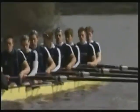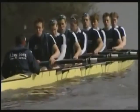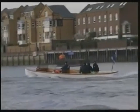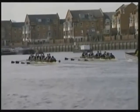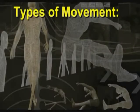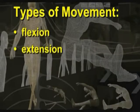Precise control of the range and speed of movement is achieved by a constantly adjusted balance between the pull exerted by an agonist and the opposing force of the antagonist. This occurs throughout the body during physical activity. We've already mentioned flexion and extension, but there are many other types of movement.